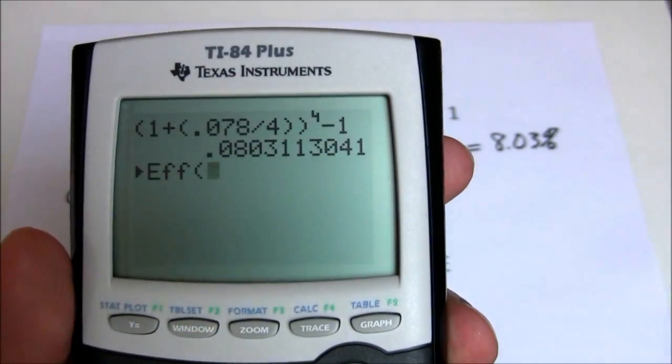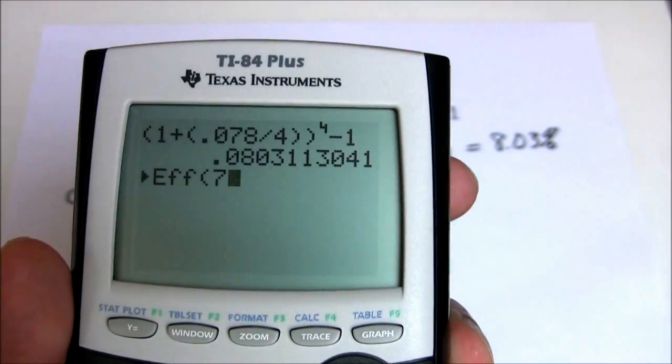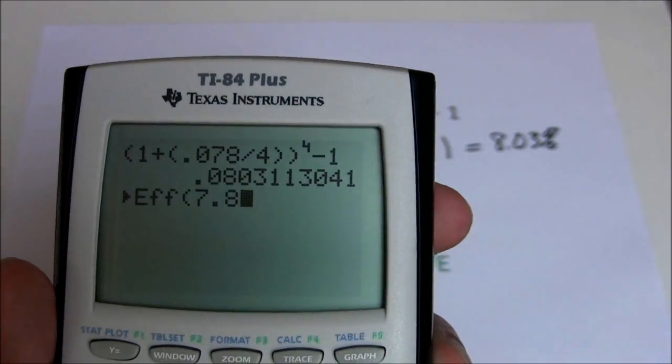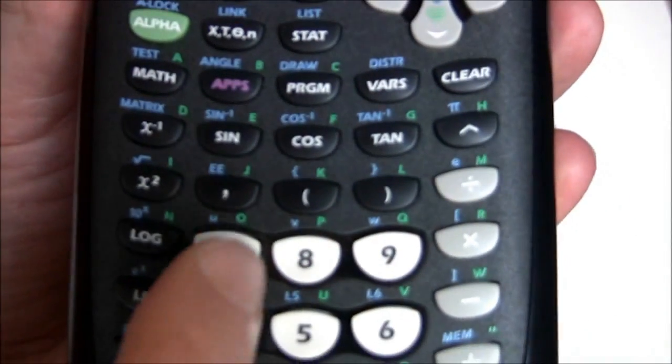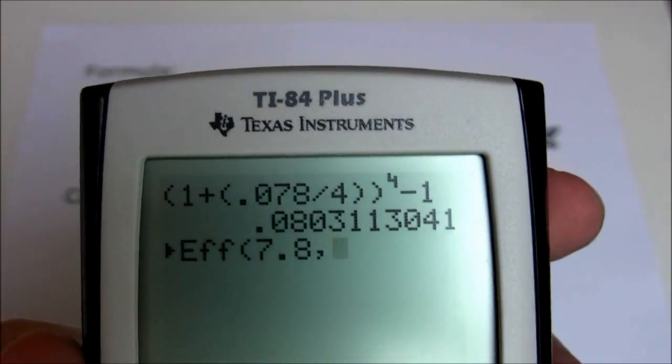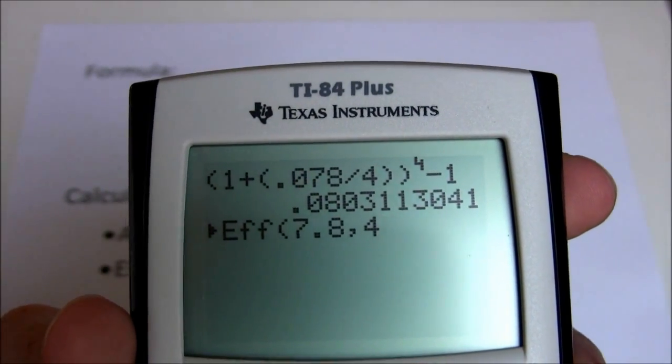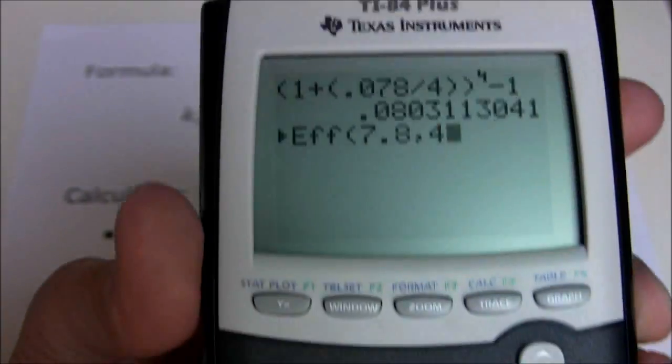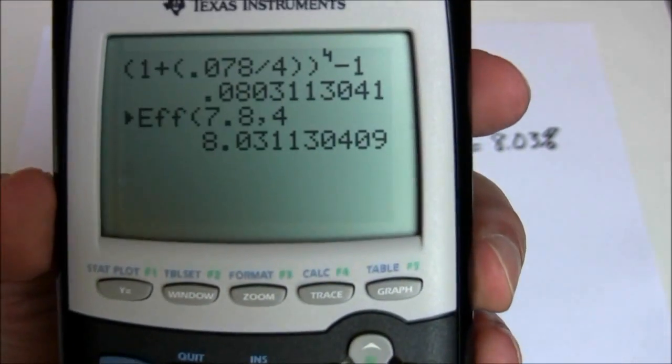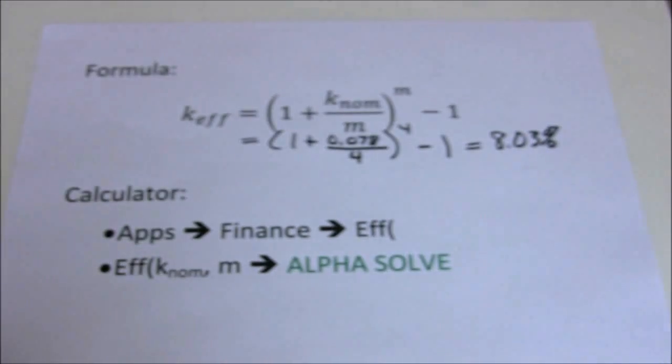Here you put the interest rate in as a percent, not as a decimal. So 7.8 is our interest rate. Your comma button right here gives you a comma separator. Then the m is the compounding periods per year. Now all I need to do alpha solve, get my answer. 8.03%, same as we got before.